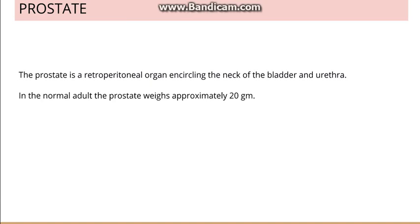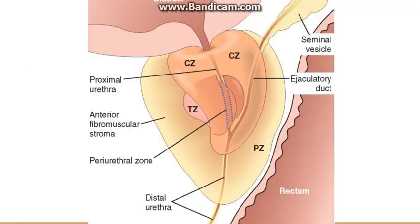Prostate is a retroperitoneal organ which encircles the neck of the bladder and the urethra. The normal weight of prostate is around 20 grams. Discussing the zones of prostate: prostate has a central zone, a peripheral zone, an anterior fibromuscular stroma zone, and a transitional zone.